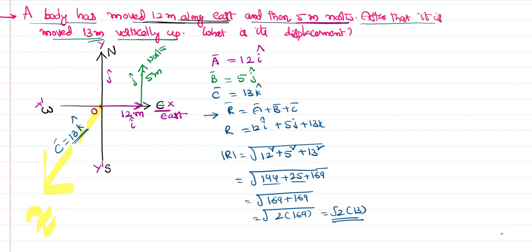That is its final position, that is how the vector is. This is how we can find the magnitude of that vector: 13 root 2.